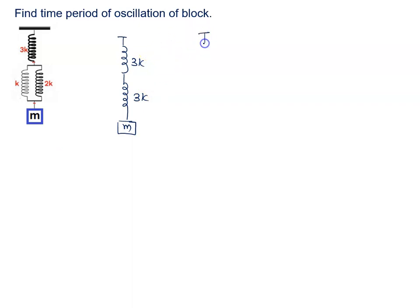Now how will the net answer? Both 3k and 3k in series gives 3k by 2, again connected to the block of mass m.